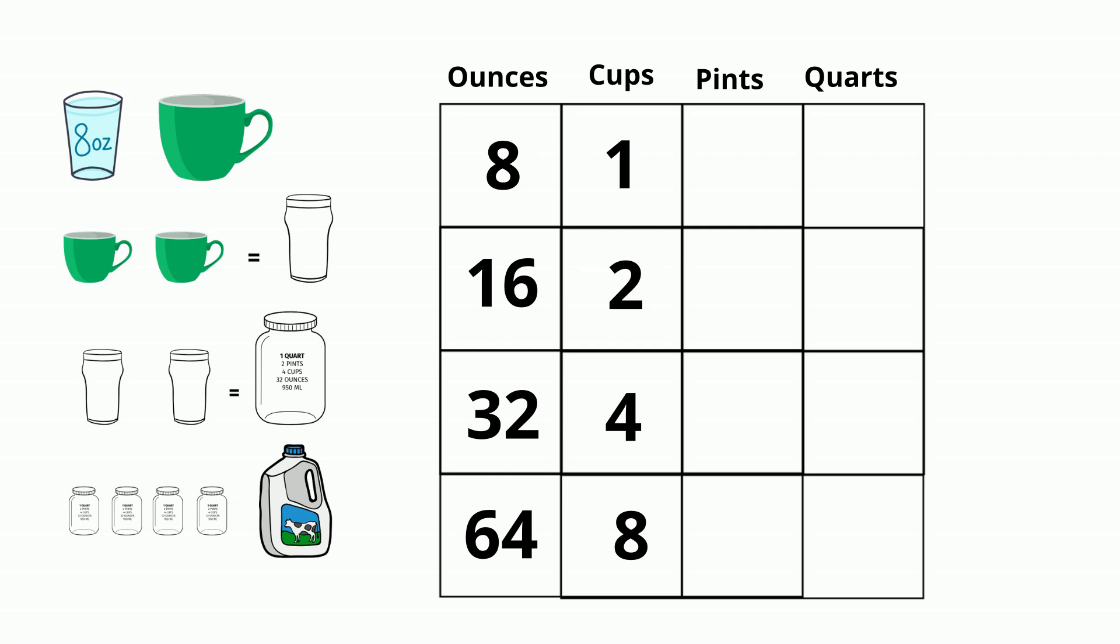Now let's move over to pints. We have cups, so let's start with what we know. We know that 2 cups equals 1 pint, so we will divide 2 divided by 2 equals 1 pint. Let's move down to the 4. We'll keep the same pattern. 4 divided by 2, because there's 2 cups in a pint, equals 2 pints.